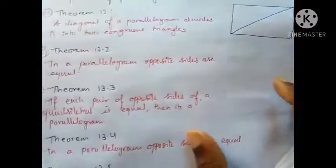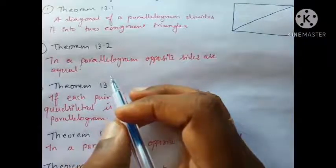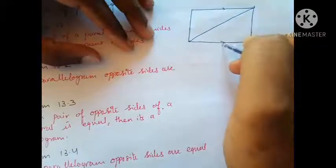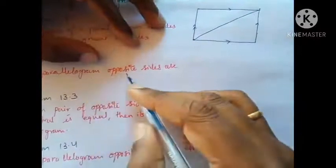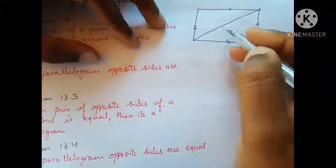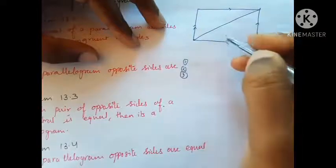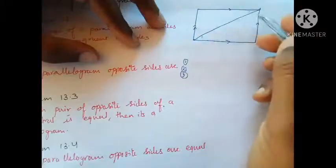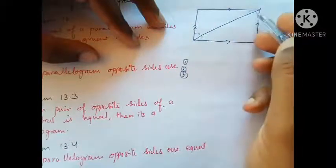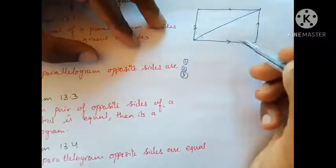Theorem 13.2 states: in a parallelogram, opposite sides are equal. To prove this, I draw a diagonal dividing it into two triangles. Since opposite sides are parallel, alternate angles are equal — this angle equals this (forming a Z), and this angle equals this (forming a Z again). The diagonal is common. So both triangles are congruent by ASA (angle-side-angle), which proves the opposite sides are equal.